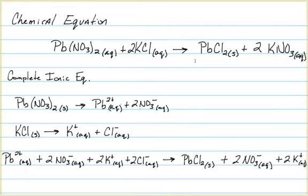Potassium nitrate is also going to be represented on the product side as separate ions. In our chemical equation, potassium nitrate was aqueous, and since it's soluble in water it will dissociate and separate into two nitrate ions and two potassium ions. We need the coefficients in this equation to be the same as what we had in our overall chemical equation and represent how many of each ion is present as the reaction takes place.